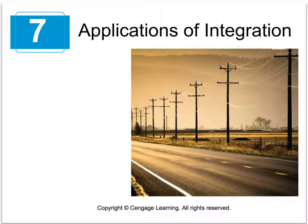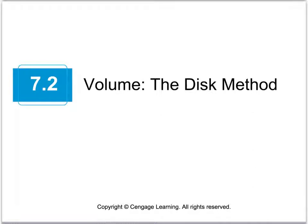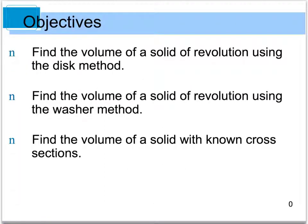Hello and welcome back to chapter 7, Applications of Integration. Today we're going to look at section 7.2, part 1, and we're going to look at volume — specifically the disk method. The objectives of this section are to find the volume of a solid of revolution using the disk method and the washer method, and then in part 2 we're going to look at finding the volume of a solid with a known cross section.